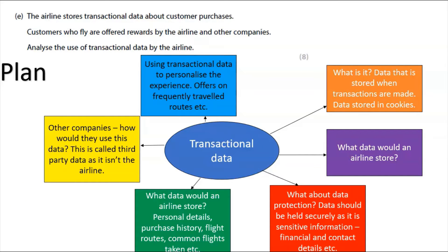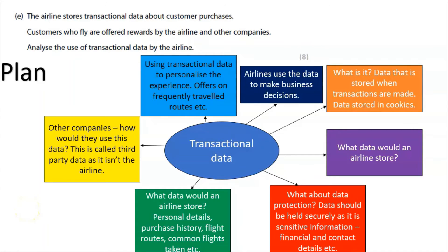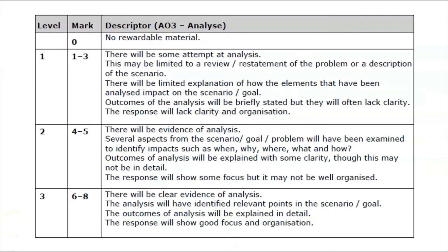Think about using transactional data to personalize the experience — offers on frequently travelled routes, for example. How are we going to personalize the experience for the customer? We've got data about where they fly and how often, so we use that to personalize what we give the customer. Then think about how airlines use that data to make business decisions. Now if we look at the mark scheme descriptors, to get level three — six to eight marks — regardless of the specific question, this is how the examiner will mark it.